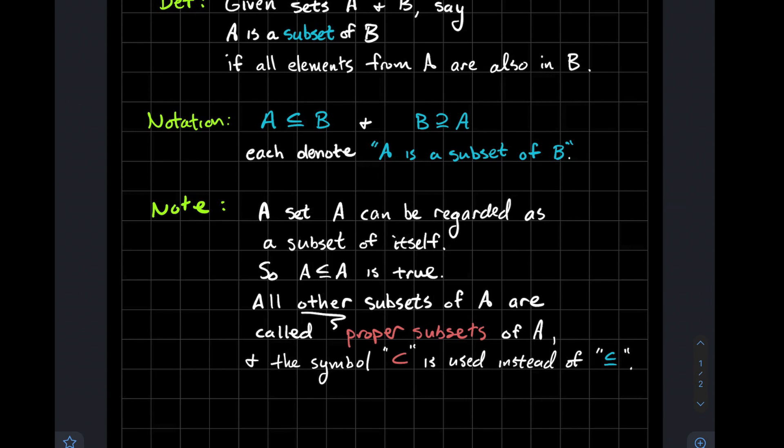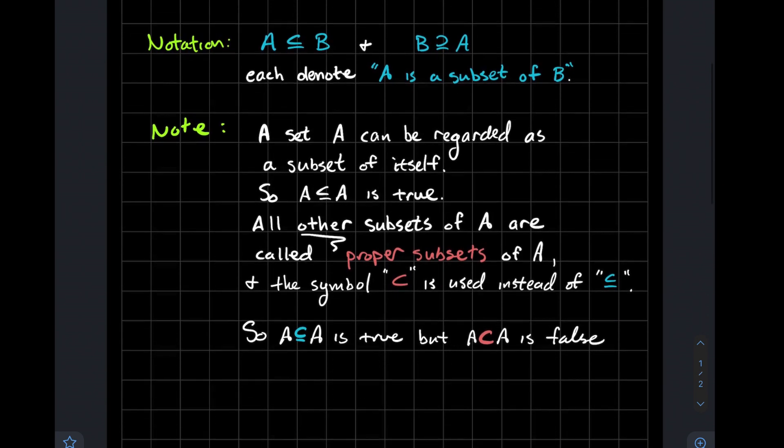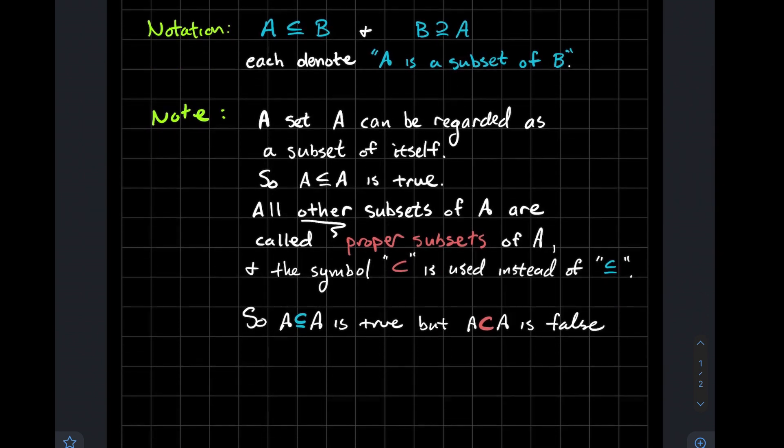And just to try to tie this back into something that you're probably more used to, in case you've never seen this stuff before, I'm assuming that you've seen some inequalities. So to recap what I just said, A is a subset of A is true, but A is a proper subset of A is false.